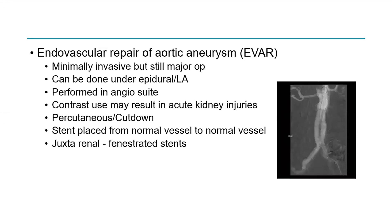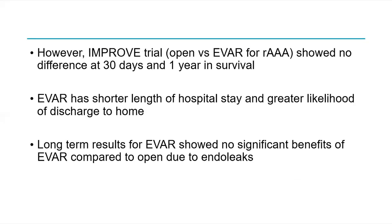The other option is endovascular repair — EVAR — which is minimally invasive though still a major procedure. It can be performed under local anaesthetic in an angiosuite. Bear in mind that contrast use may cause acute kidney injury in an already volume-depleted patient. It can be done percutaneously. The image on the right shows a bifurcated stent-graft with the aneurysm fully excluded and contrast flowing nicely within the stents. However, the IMPROVE randomised controlled trial in the UK showed no difference in survival at 30 days or one year, partly due to the risk of abdominal compartment syndrome with EVAR. EVAR does offer shorter hospital stay and greater likelihood of discharge home, but long-term it confers no extra benefit over open repair due to the risk of endoleaks.